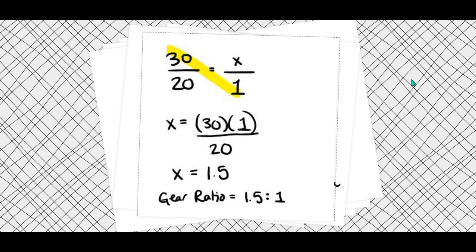I want to express the gear ratio as number to one, so I'll reduce it. You can divide 30 by 20, or set up the ratio: 30 over 20 equals X over 1. Using cross-multiplication, X equals 30 times 1 divided by 20, which is 1.5. So for these two gears in mesh, the gear ratio is 1.5 to 1.